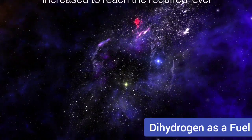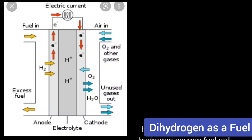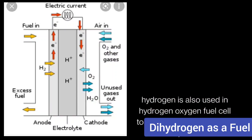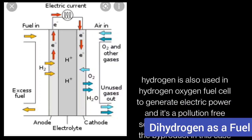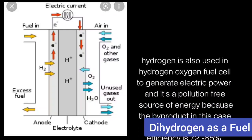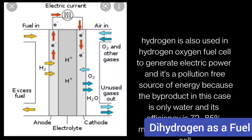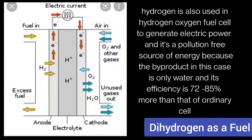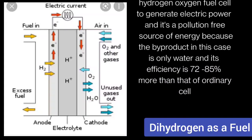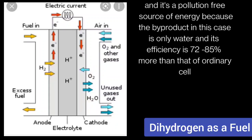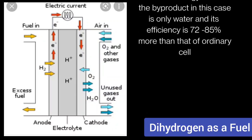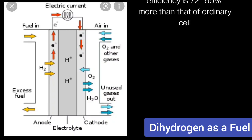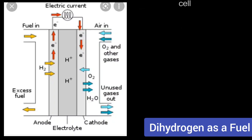Another example is the use of dihydrogen in the hydrogen-oxygen fuel cell. Hydrogen is used in fuel cells to generate electric power, and it is pollution-free because the only byproduct is water. Its efficiency is about 70 to 85 percent, which is much more than that of ordinary cells. These are two key examples where the hydrogen economy has been applied.